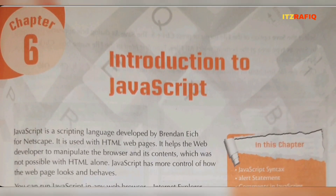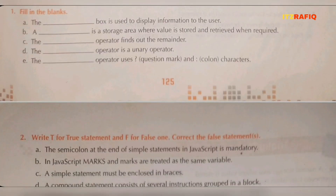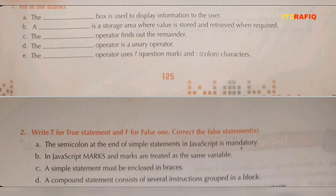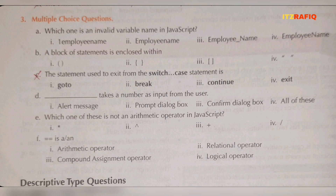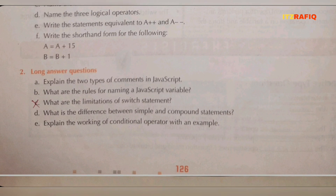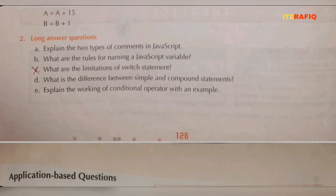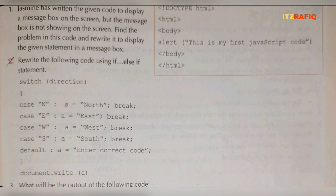Now we move to Chapter 6: Introduction to JavaScript. Fill in the blanks, all are required. True and false, number E is not required. MCQ number C is not required. Short answers, all are required. Long answers, only number C is not required. From application based, number 2 is not required.